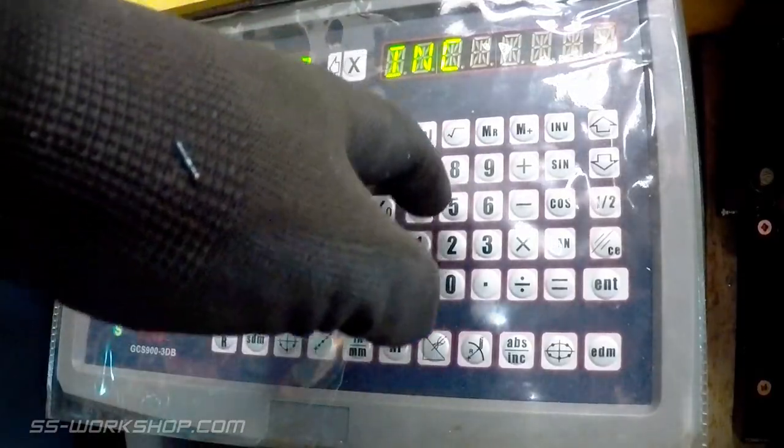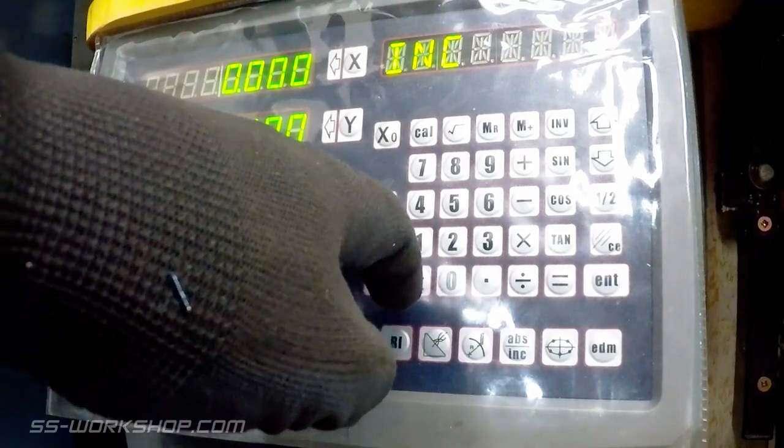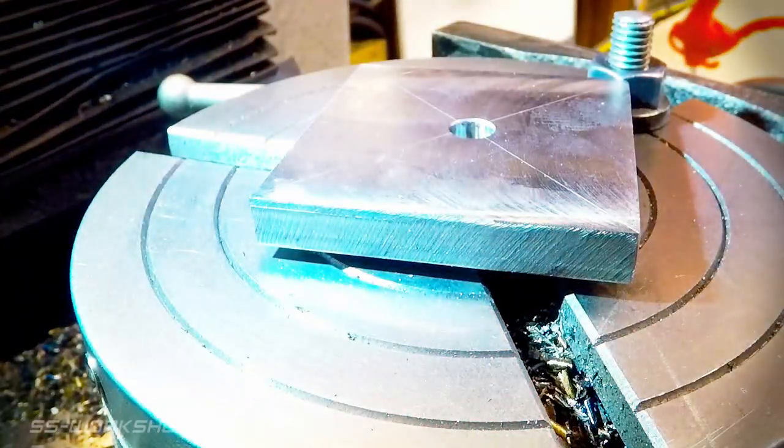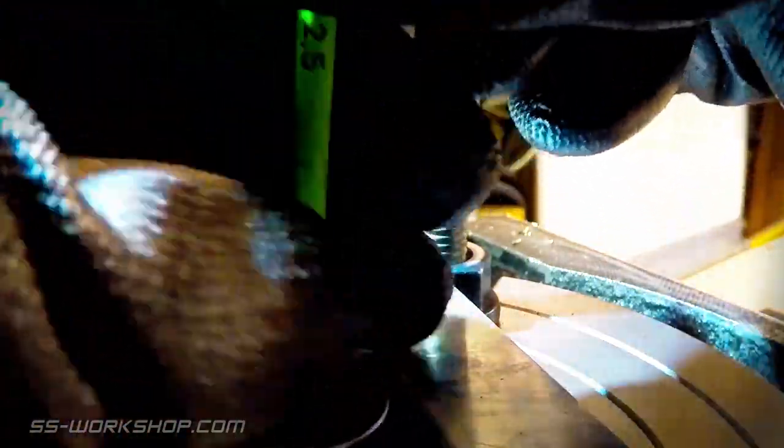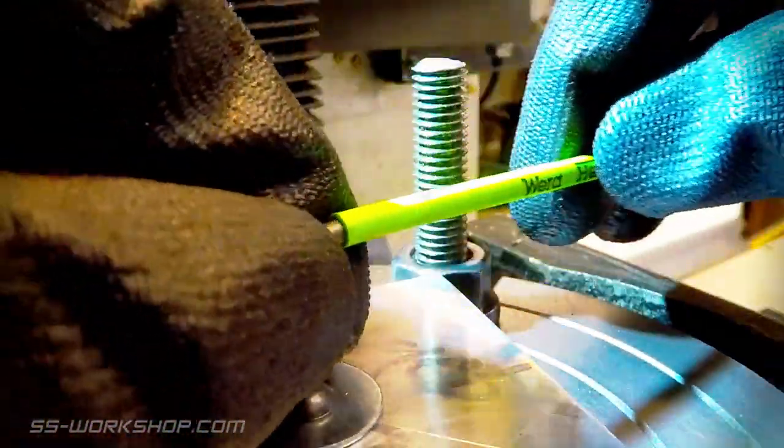I then centre the rotary table on the mill and zero the digital readout. The plate is then located on the rotary table and fixed in place with a screw.